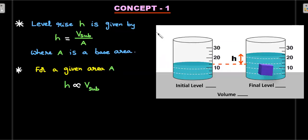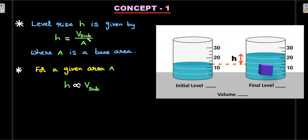Concept one: level rise. If you place an object in a liquid, the level rises based on the volume of the body submerged. If the base area is A, the height rise h equals V_submerged divided by A. For a given area, h is directly proportional to V_submerged, so for different objects in the same vessel, measuring V_submerged directly gives you the measurement for h.